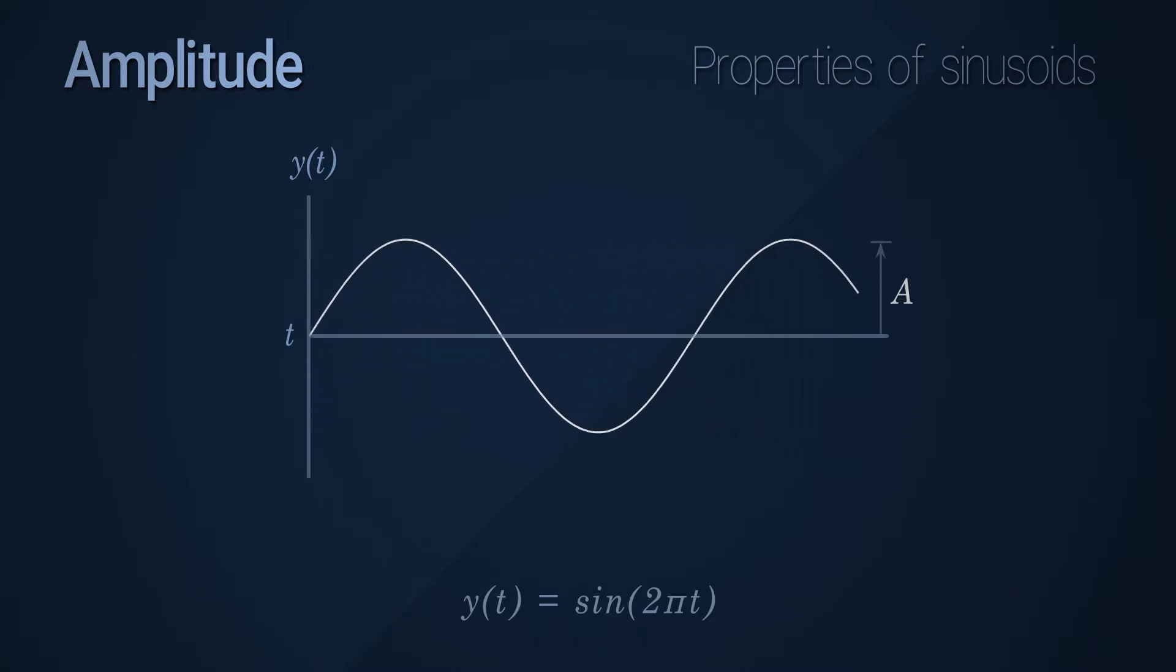Of course, a wave can be shifted and unbalanced in the real world, and in this case, we measure the amplitude from the wave's natural resting position, or by taking an average of all the values of the wave.